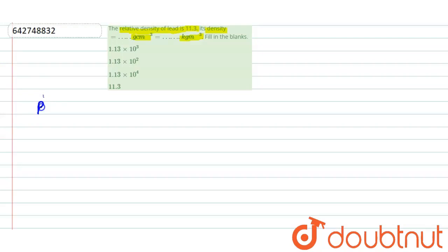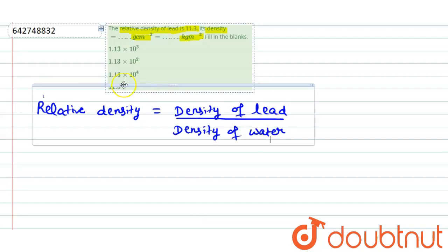As we know, relative density is defined as the ratio of density of substance, in this case, density of lead divided by density of water. Right?